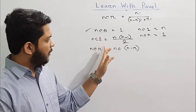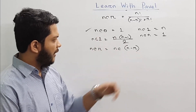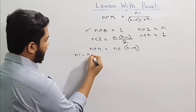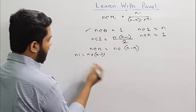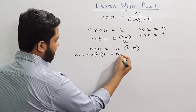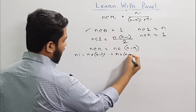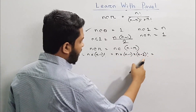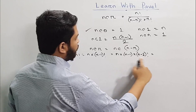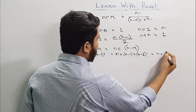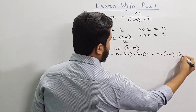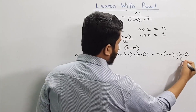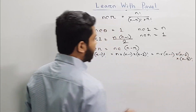I am going to show you the n factorial solution: n factorial is n into n minus 1 factorial. Then n minus 1 factorial is n minus 1 into n minus 2 factorial. And n minus 2 factorial is n minus 2 into n minus 3 factorial.